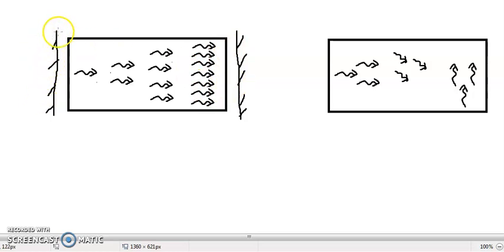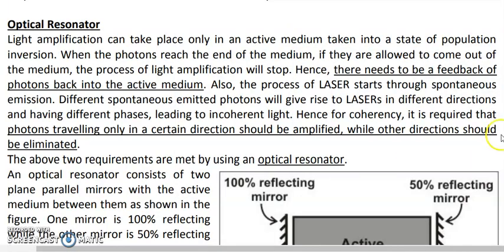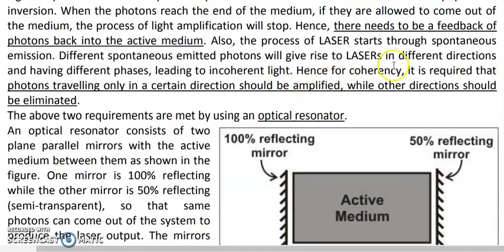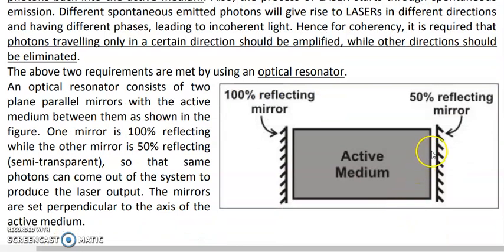So what is the optical resonator? It is simply an arrangement of two plane parallel mirrors, as seen in this diagram, with the active medium placed between them. The purpose of these mirrors is to provide feedback of photons back into the active medium so that the process of light amplification will continue.